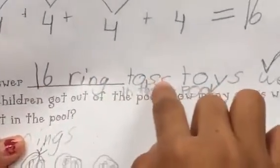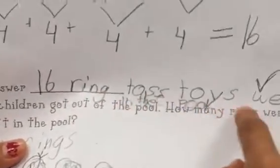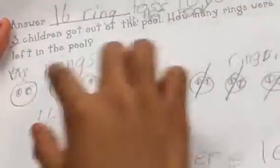And my statement was 16 ring toss toys were in the pool. And at the bottom, I said three children, so three children got out of the pool, so I drew them, and I put R's so that you know the rings, and then these are the children.